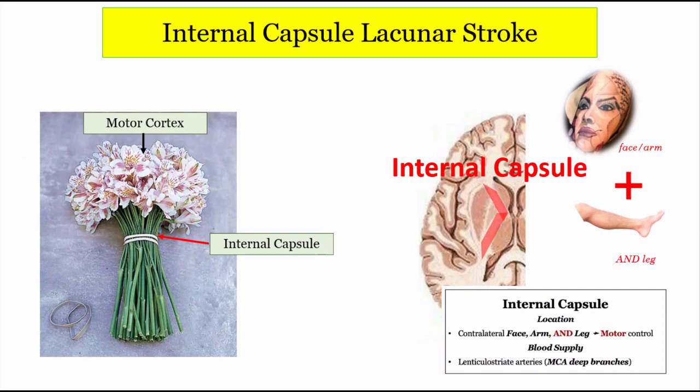To help you visualize this a little better, think of the primary motor cortex as the flowers on this beautiful bouquet and the stems as the axons traveling down into the spinal cord, where they start to condense around the rubber band — that's just like the internal capsule. Complete contralateral hemiparesis with no other signs and symptoms is a lacunar infarction, not an ACA or MCA occlusion. Small vessel, major motor consequence.